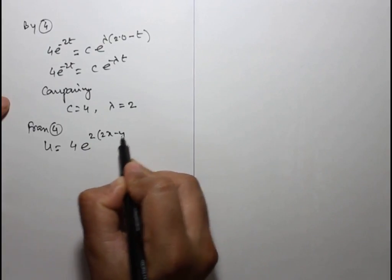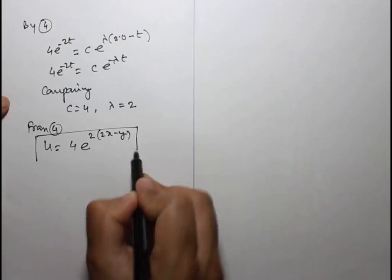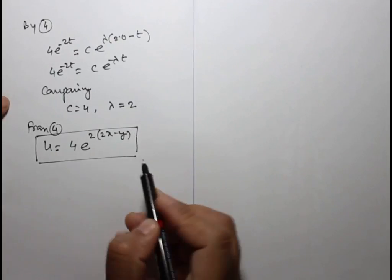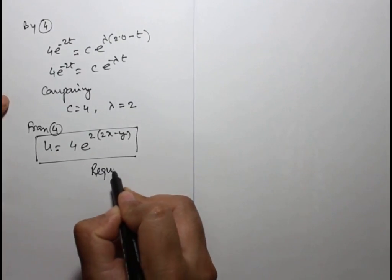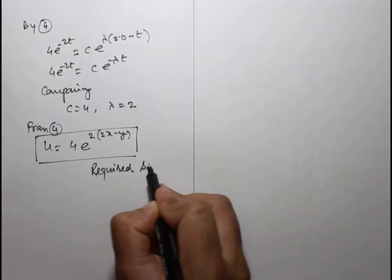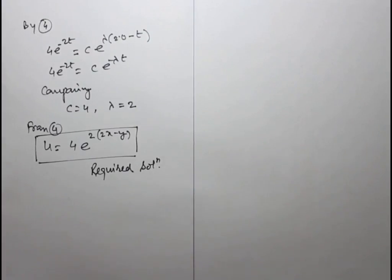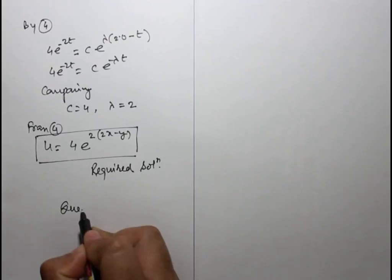Therefore u equals 4e^(2x minus y). This is the required particular solution.